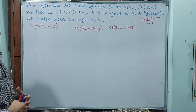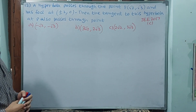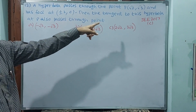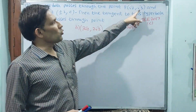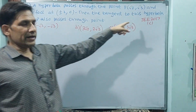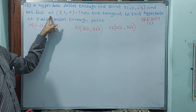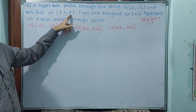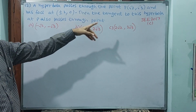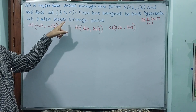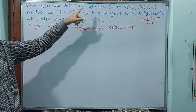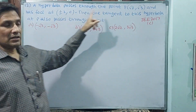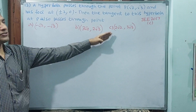See question number 12. The hyperbola passes through the point P, root 2, root 3, and has foci at plus or minus 2, 0. There is a tangent to this hyperbola at P, which also passes through another point.